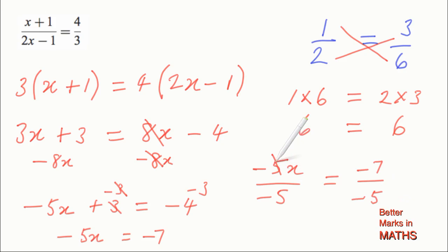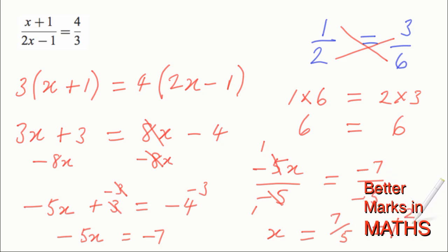These two cancel, so minus 5 into itself equals 1. 1x is x, x divided by 1 is just x, and that's equal to positive 7 fifths. You can write that as a mixed number: how many 5s in 7? The answer is 1 with 2 left over, so that would be 1 and 2 fifths.